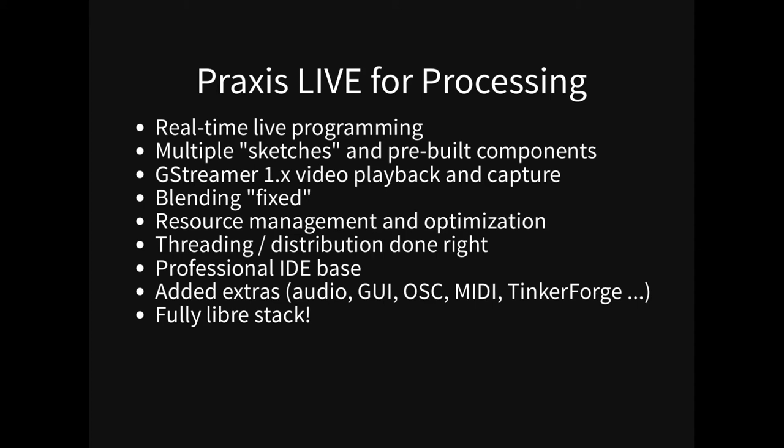Blending fixed — I extended the Processing pipeline to use pre-multiplied alpha, because Processing mixes the two approaches. So when you start compositing down a whole graph, a chain of things, it goes wrong. Various things around resource management: loading images, caching things. Also if you have a long chain of operations, it will reuse textures from before and work out what it can copy and not. Threading and distribution done right — this idea of being able to pass things lock-free between a background process that's talking to the network, or audio, or sensors, or whatever. That's all built-in and you don't have to think about it.